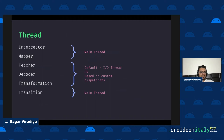I also want to touch on the threads on which each pipeline step gets executed. The first two steps (Interceptor and Mapper) get executed on the main thread. The next three steps (Fetcher, Decoder, and Transformation) are executed on the IO thread by default, but you can specify your own custom coroutine dispatcher for each of these steps and the library will use that dispatcher. The last step — Transition, which is the animation step and is not part of the core pipeline — has to happen on the main thread.